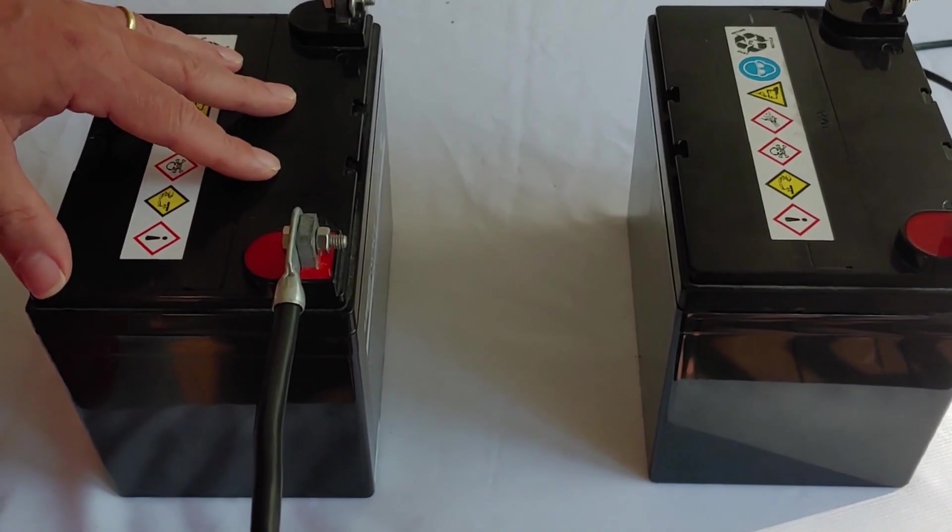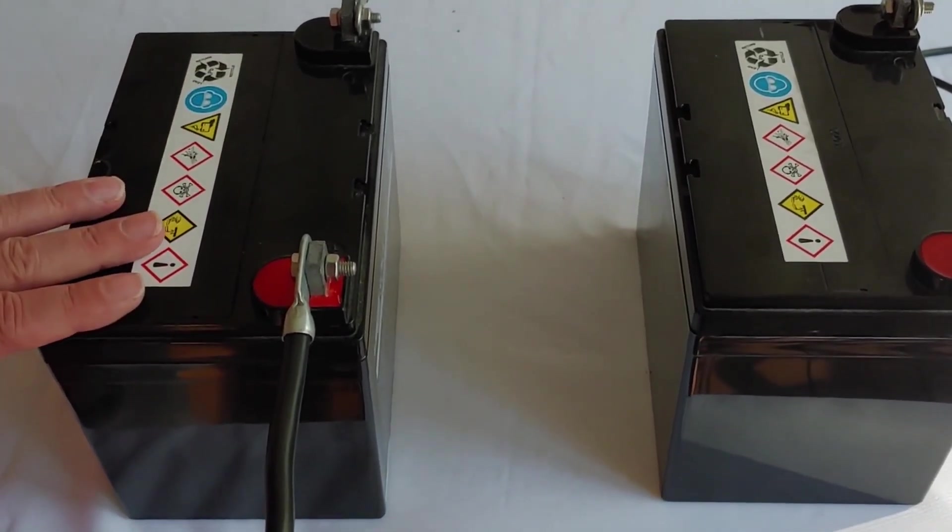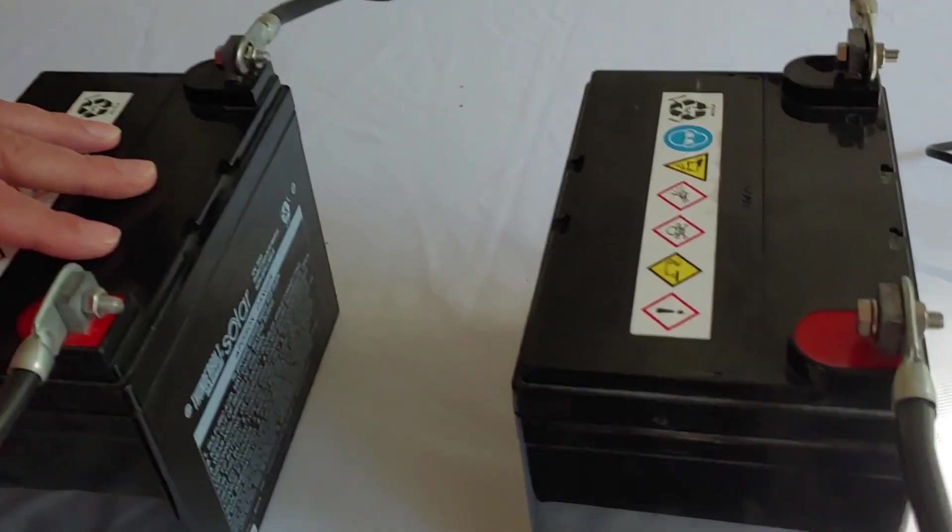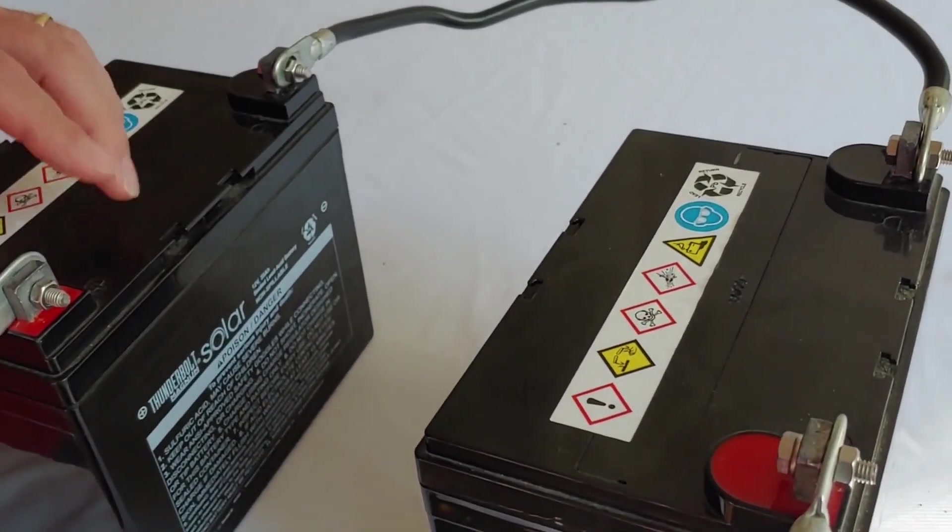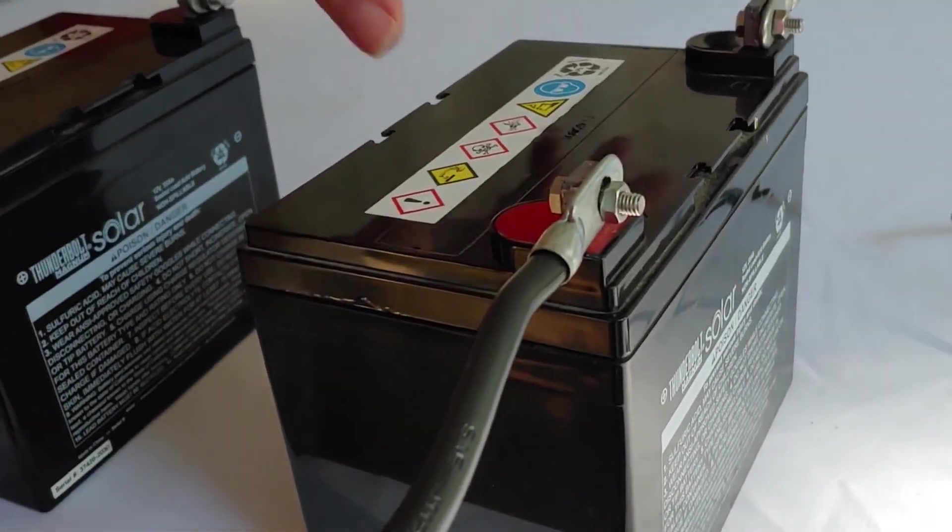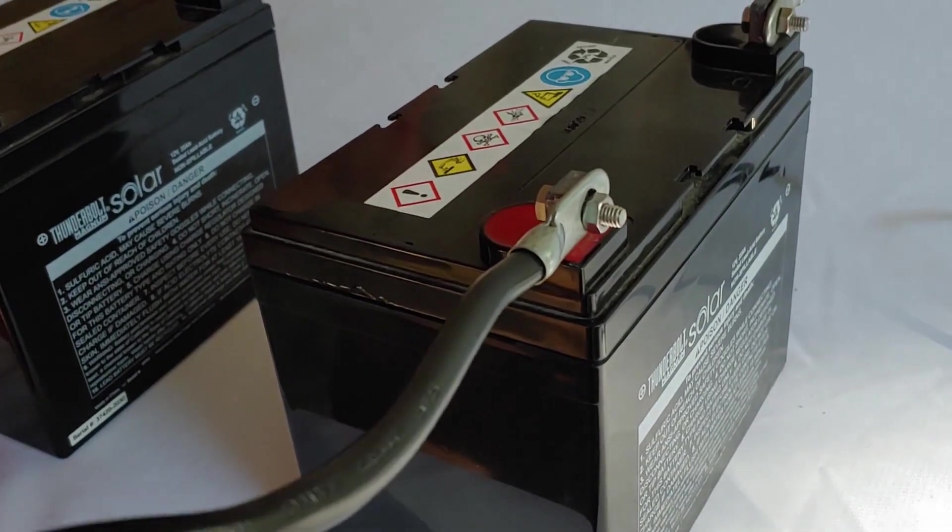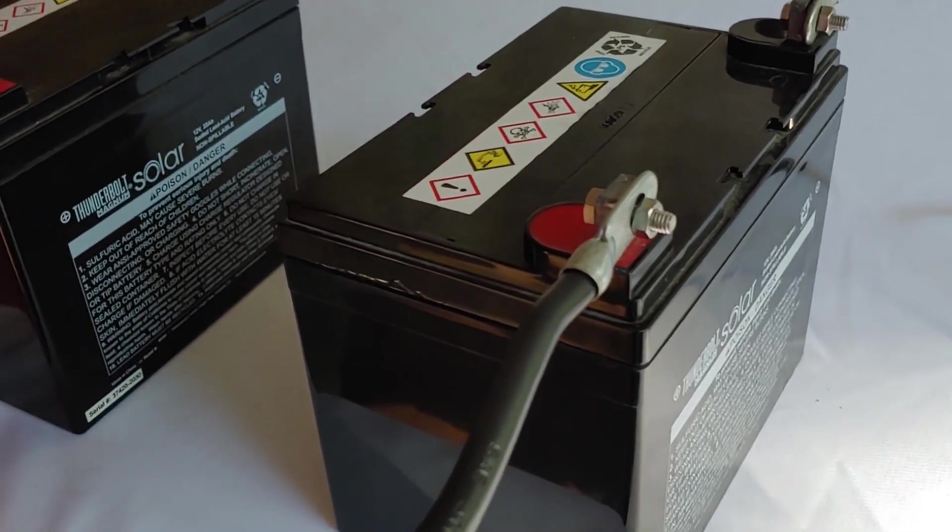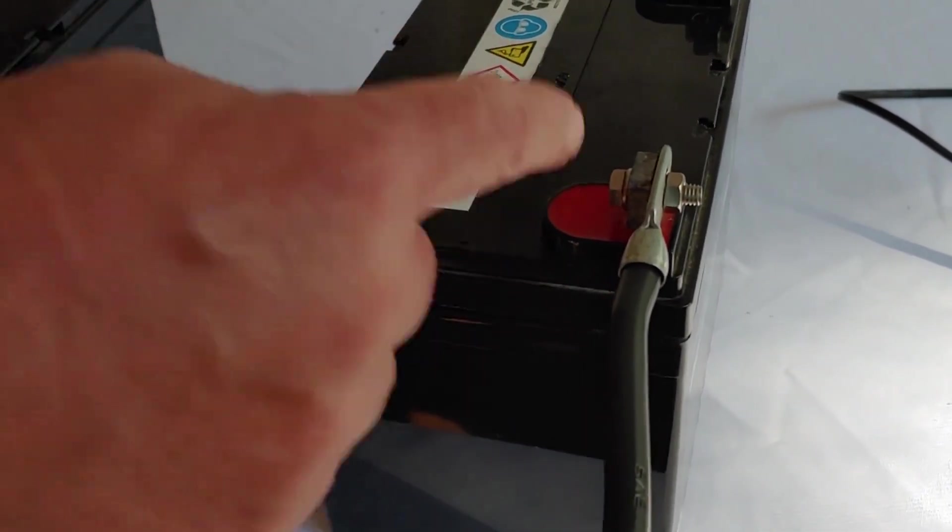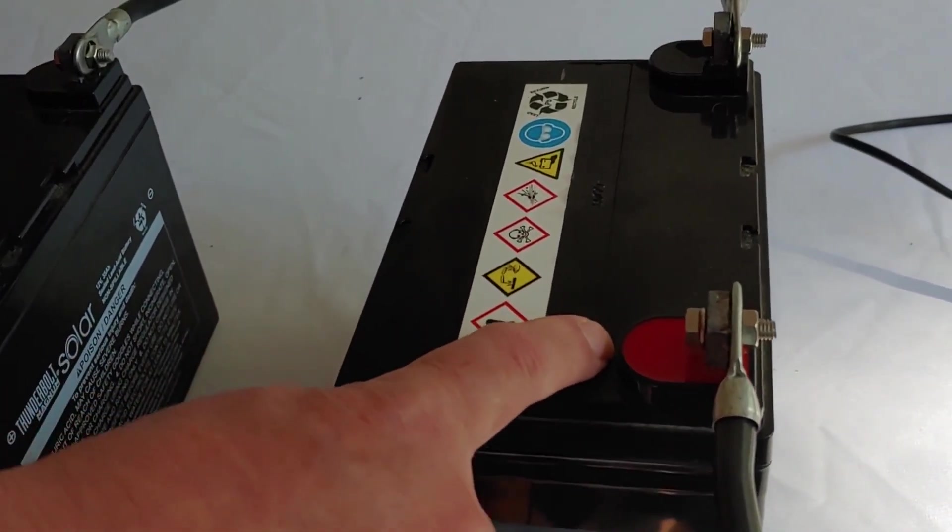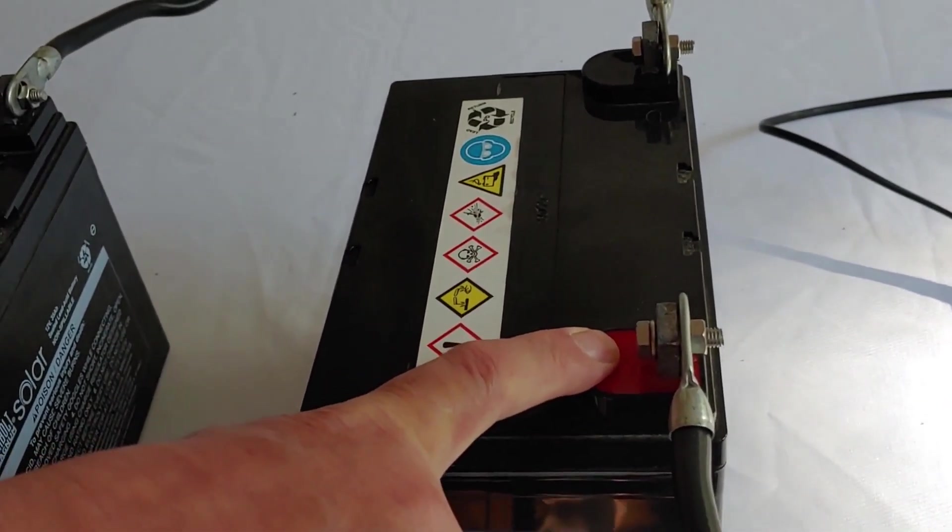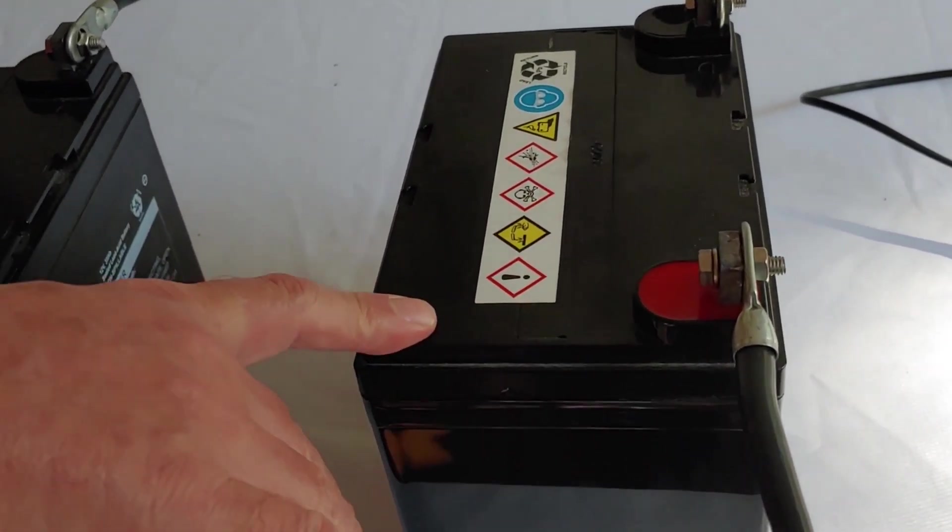These are two 35 amp hour batteries. They are sealed lead acid and at the moment I have them connected in parallel, which means I have the positive connected to the positive and the negative connected to the negative. Now these wires are a bit longer than you'd want them to be. You want your wires to be as short as possible and that will make the charging and discharging much more efficient. But at the moment this is just for demonstration purposes.